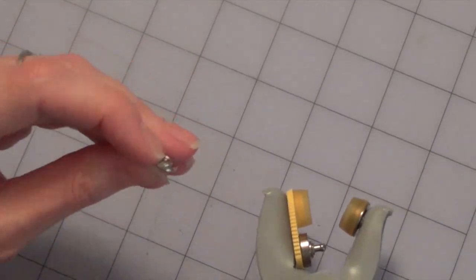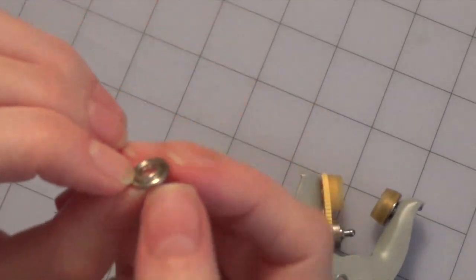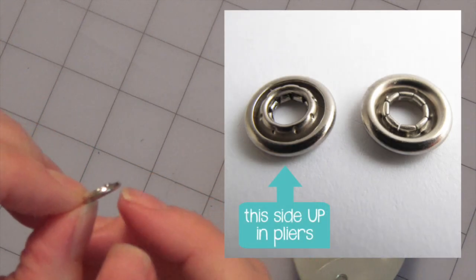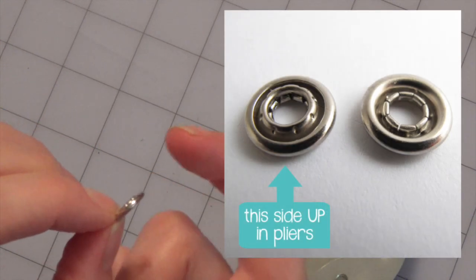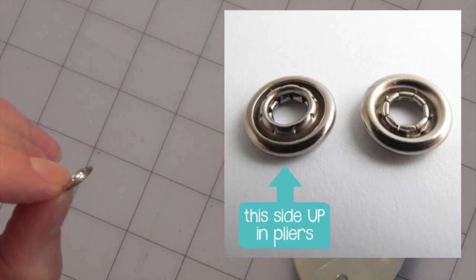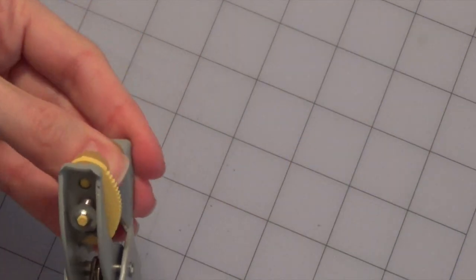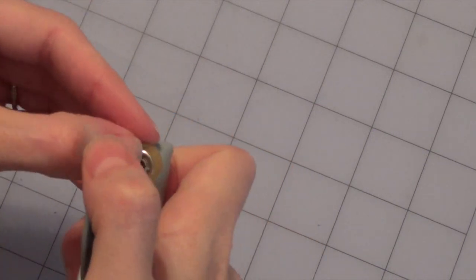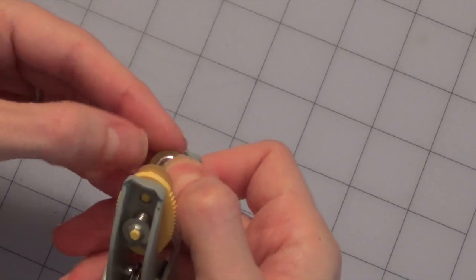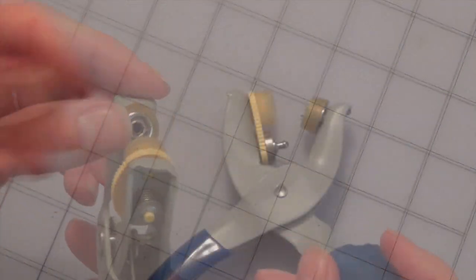Now for the other end, this one's a little bit harder to figure out. There are two sides to this piece. One is almost flush and then the other, the middle part sticks out a little bit. Where the middle part sticks out, that needs to face up when you set it in the bottom jaw of the pliers.